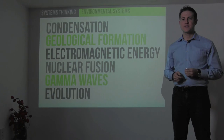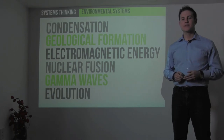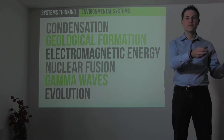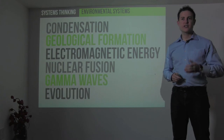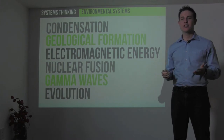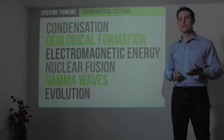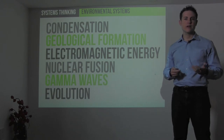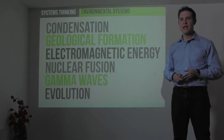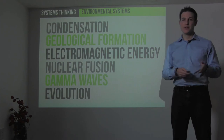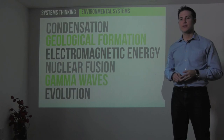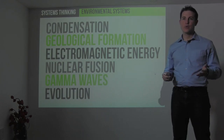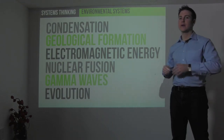The last types of systems are ecological or environmental systems — how the world operates, effectively externalized from the human existence. Condensation, geological formation, electromagnetic energy, nuclear fusion, nuclear fission, gamma waves, and evolution are all examples of natural or ecological systems. Human systems, whether inside our body or external systems between multiple humans or groups of humans, interact in a substantial way with ecological and environmental systems.